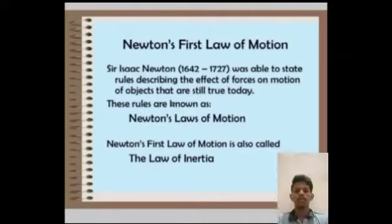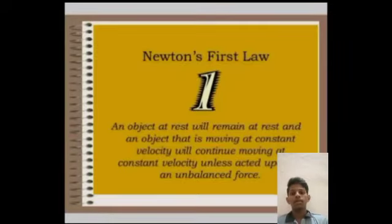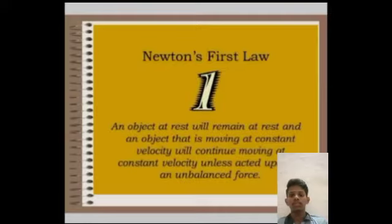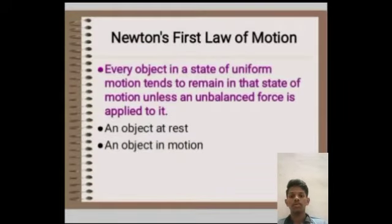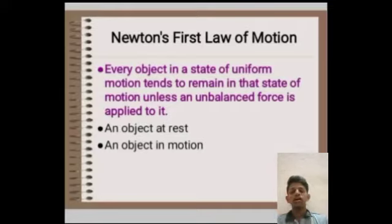Newton's First Law of Motion is also called the Law of Inertia. Newton's First Law: an object at rest will remain at rest. An object that is moving at constant velocity will continue moving at constant velocity unless acted upon by an unbalanced force. Every object in a state of uniform motion tends to remain in that state of motion unless an unbalanced force is applied to it.